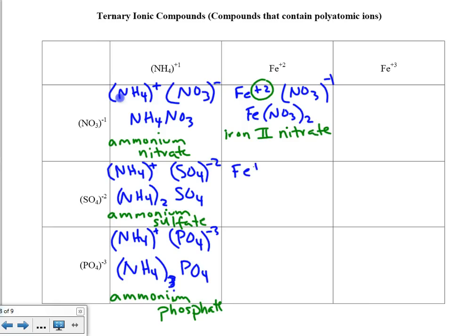The next pairing: Fe⁺² matched up with SO₄⁻². Plus 2 minus 2, we only need one of each. We rewrite this as FeSO₄. The name of this substance is iron 2 sulfate.